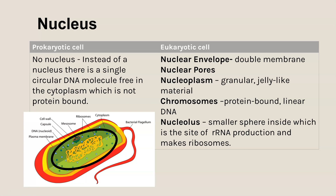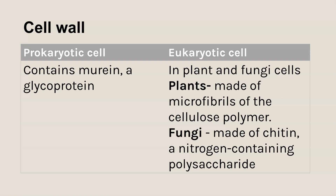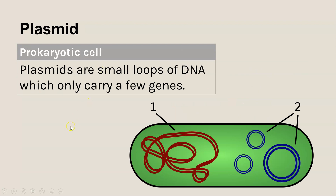Comparing cell walls: not all eukaryotic cells have a cell wall — it is only plants and fungi. The chemical composition also differs: plant cell walls contain cellulose, fungal cell walls contain chitin (a nitrogen-containing polysaccharide), and prokaryotic cell walls contain a glycoprotein called murein.